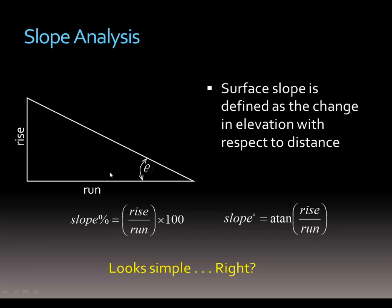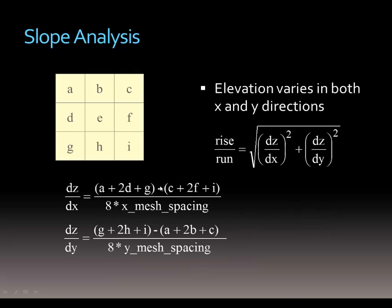Slope is basically pretty easy to explain. It's rise over run — how far does the elevation increase over the horizontal distance? If we have rise over run we can calculate times 100 to get the percent slope. Or in degrees we could take the rise over run ratio and use the arctangent function to figure out the degrees of slope.